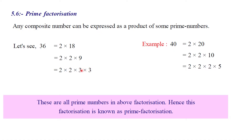So next, 3 is a prime number. I will write in this part. So the answer is: 36 = 2 into 2 into 3 into 3. This is the multiplication: 2 into 2 is 4, 4 into 3 is 12, 12 into 3 is 36. That means the whole number is a product of prime numbers.